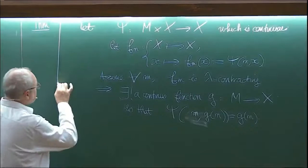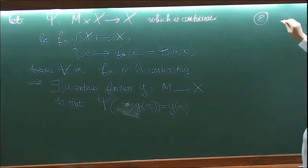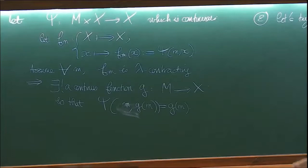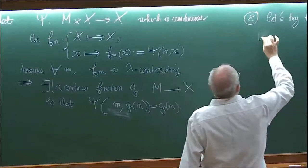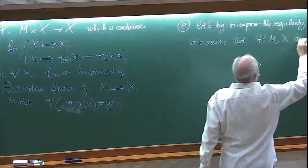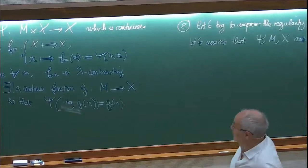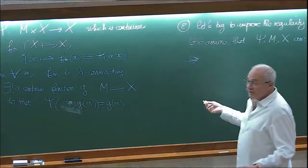That's one improvement. Now let's try to improve the regularity. Imagine that you are in a situation where everything is C1. Assume that psi(m, x) is C1 — meaning M and x are C1 manifolds, or even C1 Banach manifolds. Then the conclusion is that g is C1.